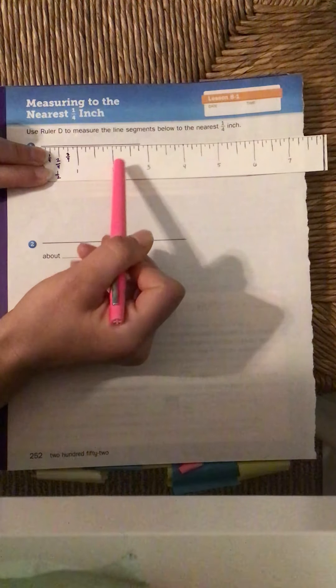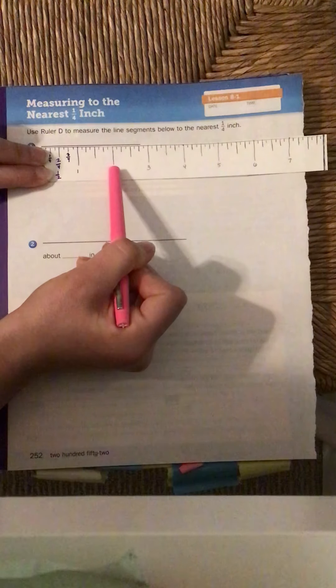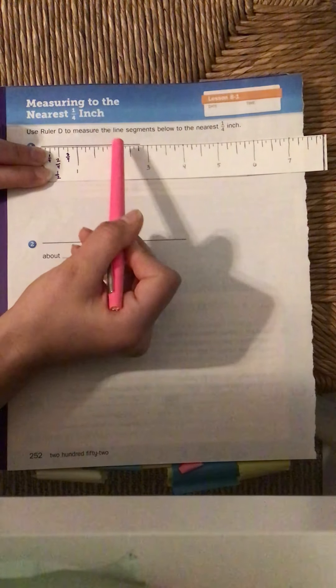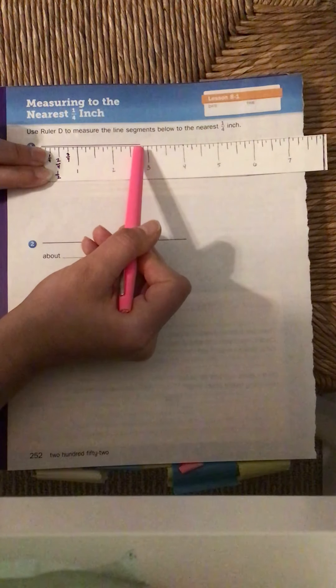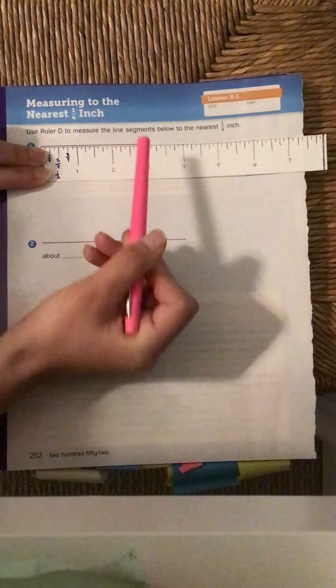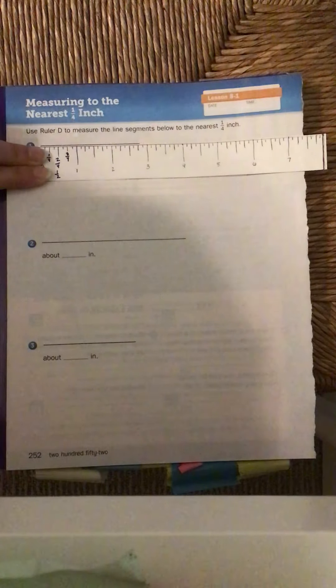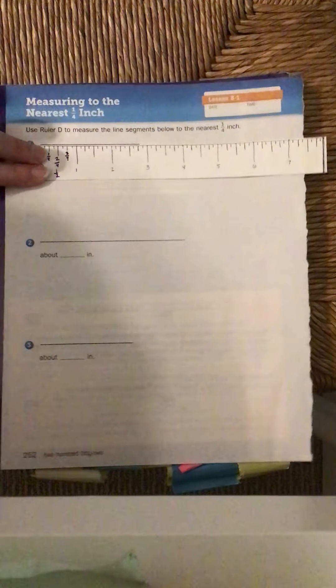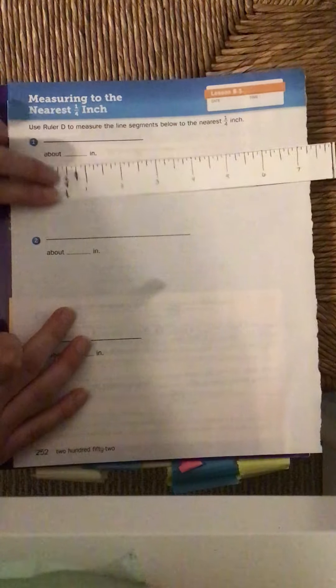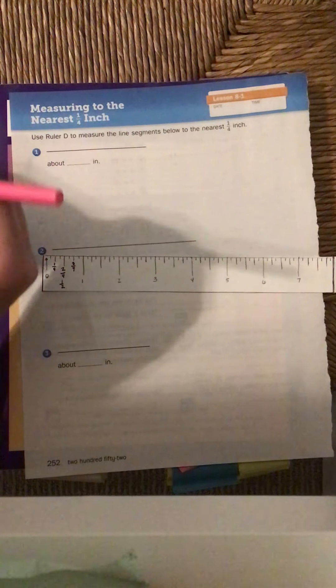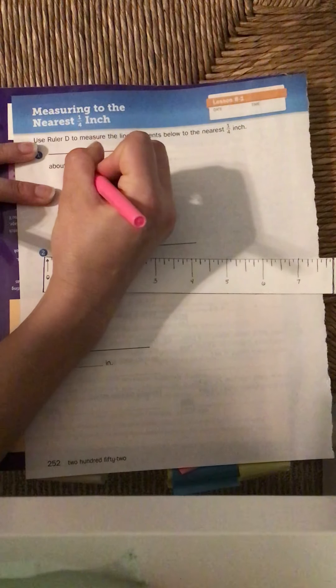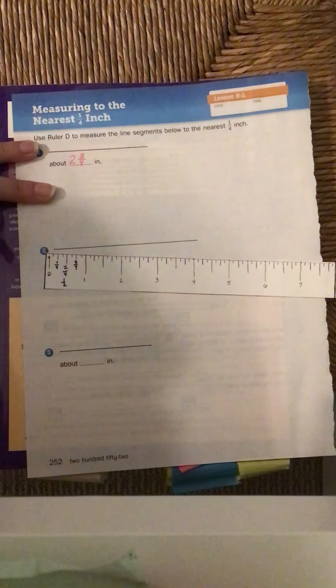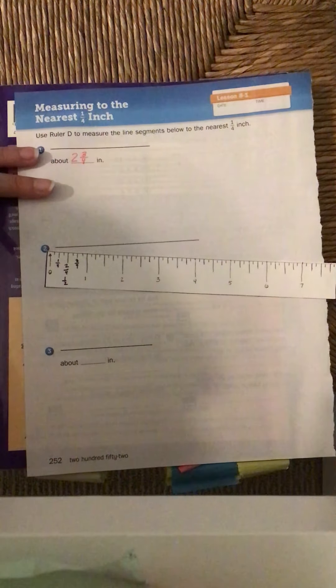So the way that I write this is I go to the last whole number, which was 2. 2 and 1 fourth, 2 and 2 fourths, 2 and 3 fourths. So this line segment measures 2 and 3 fourths inches. So right below, I'm going to write in, and you should too, 2 and 3 fourths inches. Excellent.